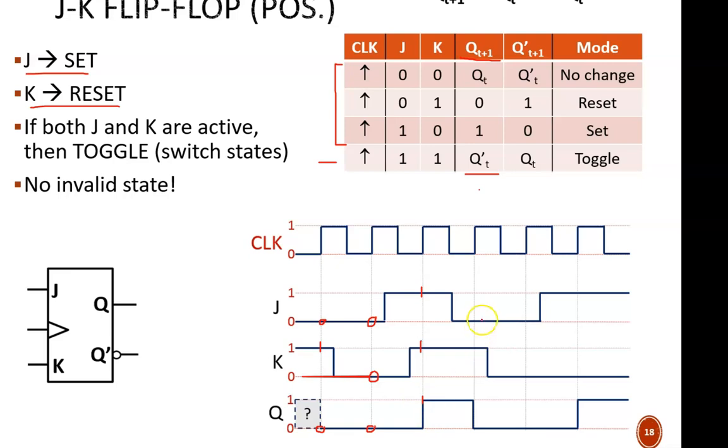One clock cycle later, the flip-flop is in reset mode, so Q is forced to 0. At the next positive edge, Q does not change. Then, at the last one in this diagram, Q is set.